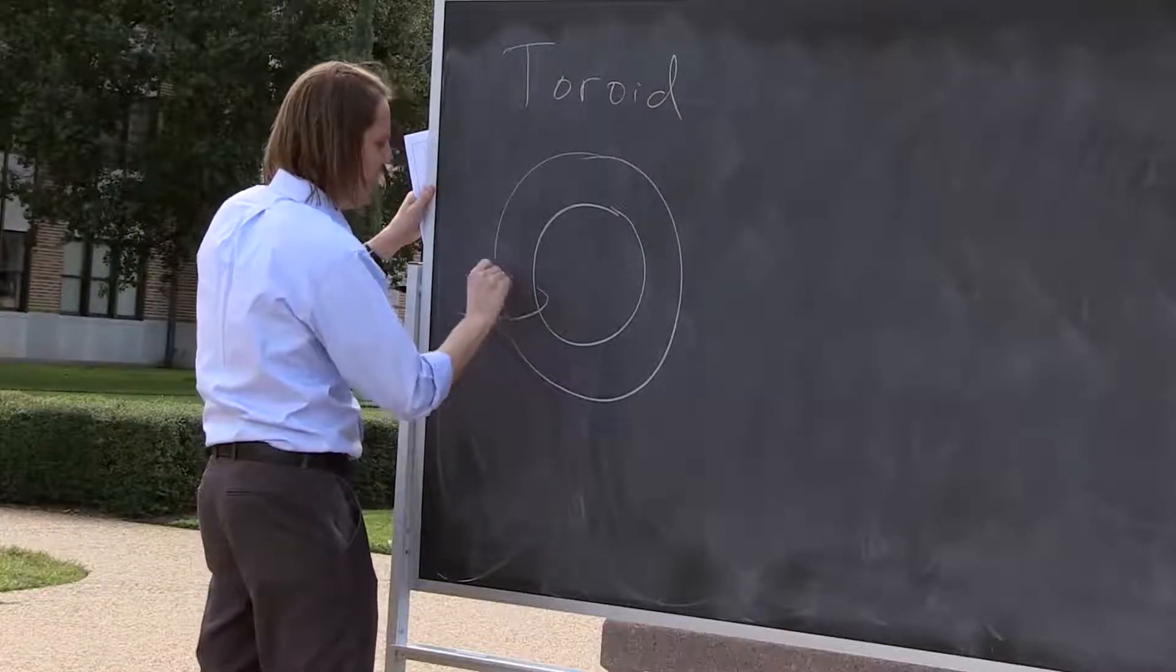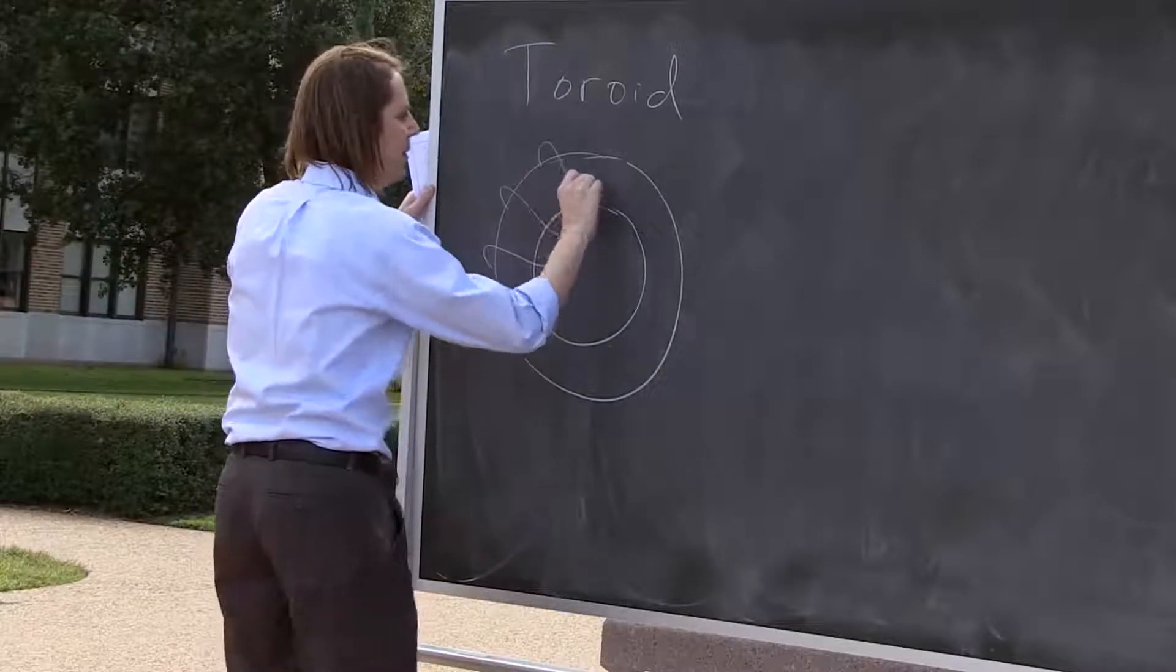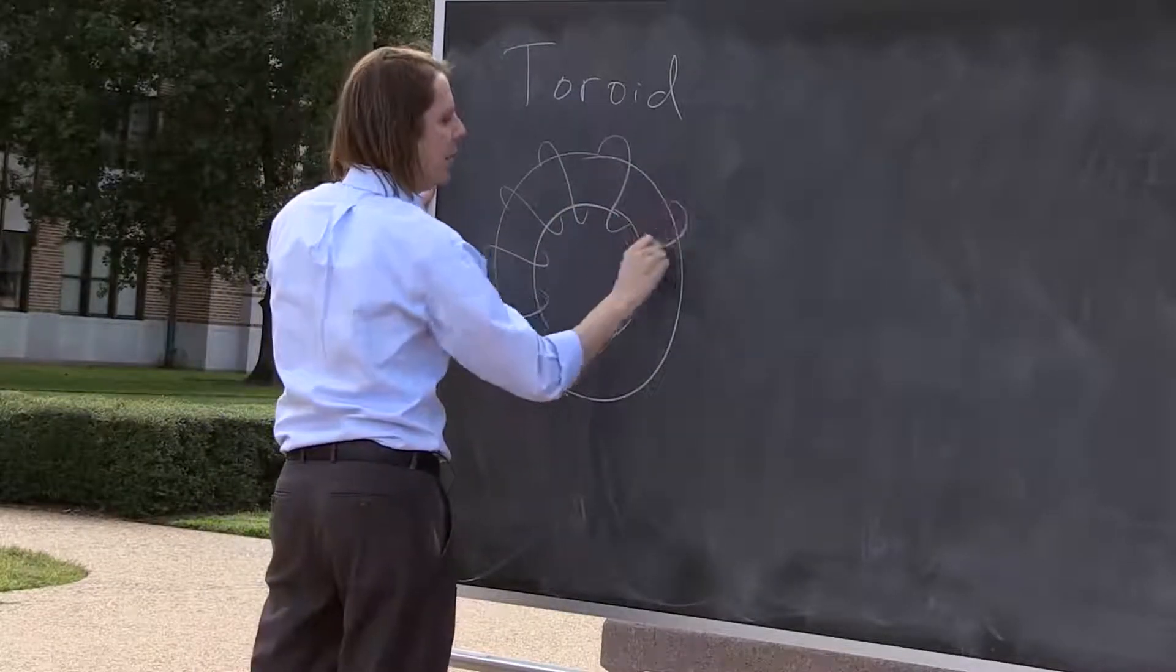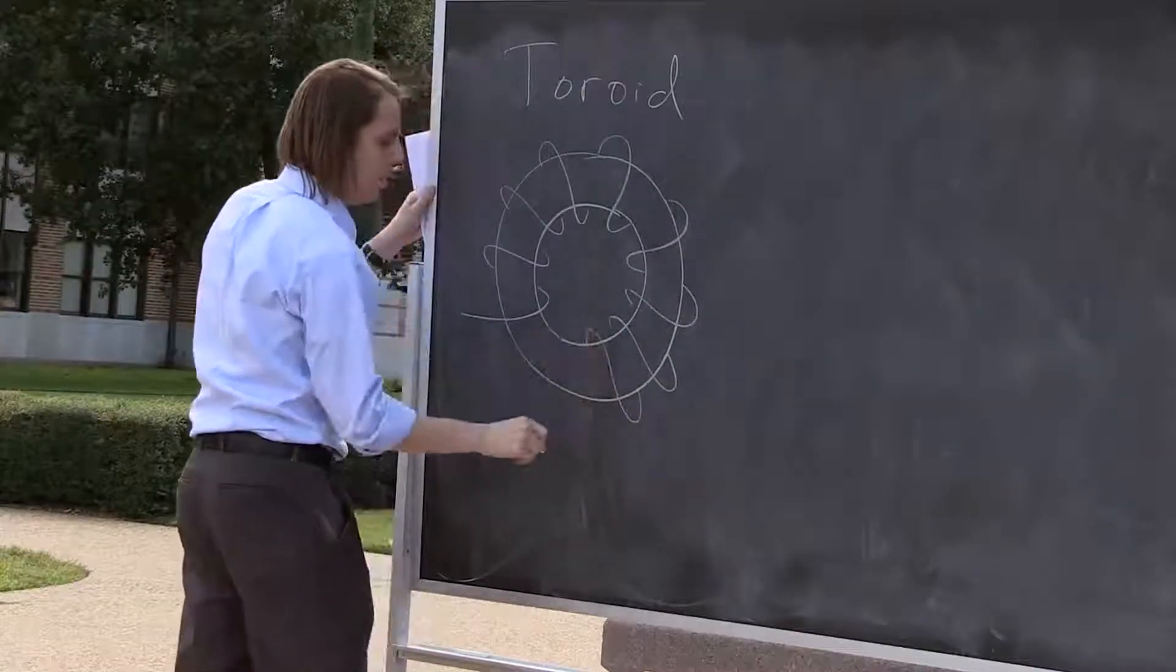So I'm going to have my wire come in and go like this, like that. So you can see, like the solenoid, it has loops of wire going around.